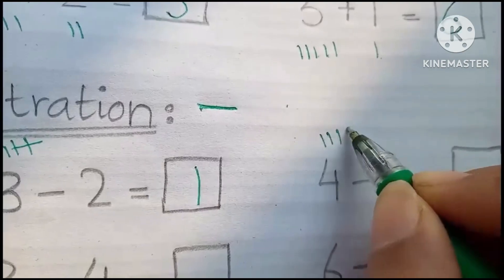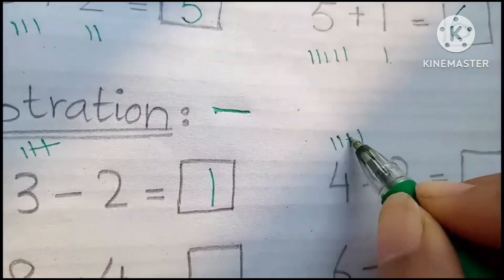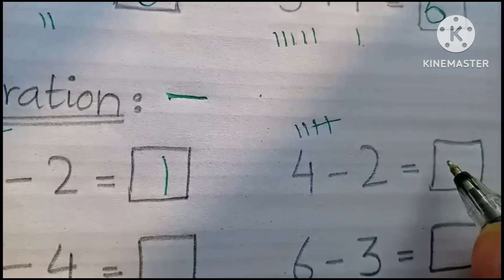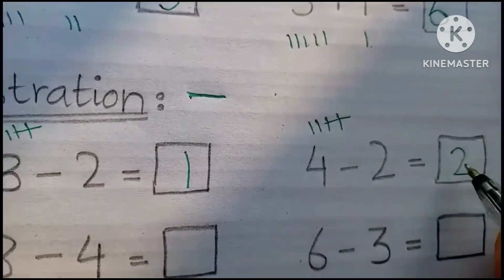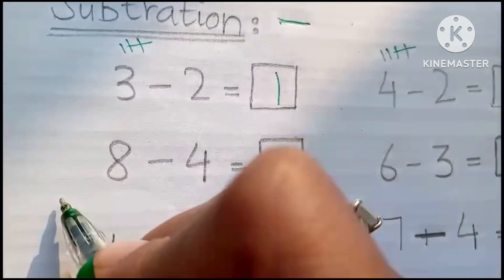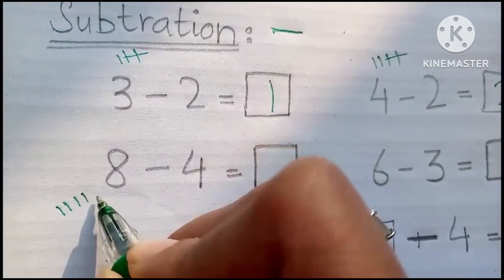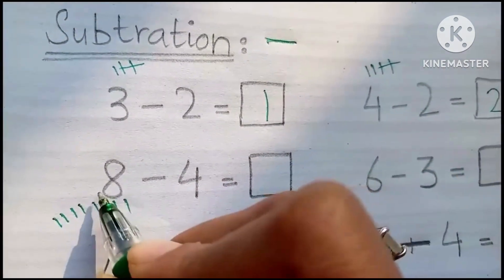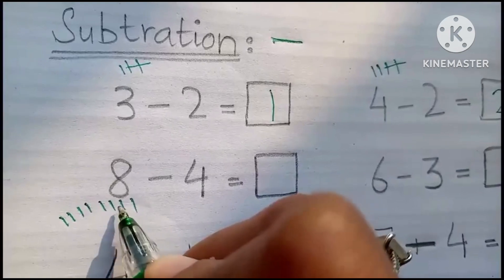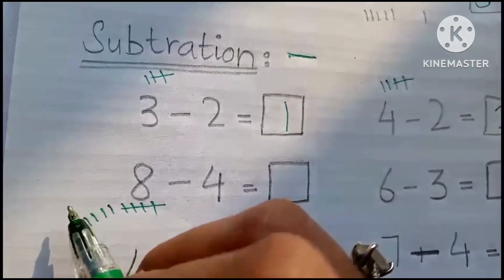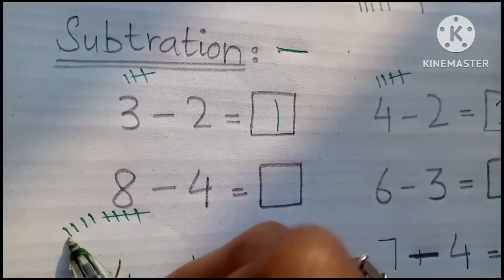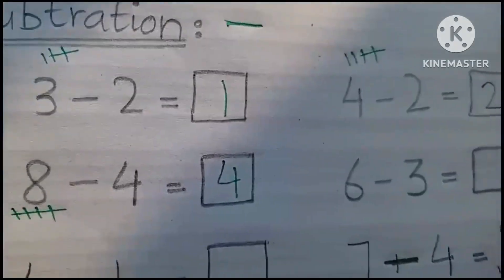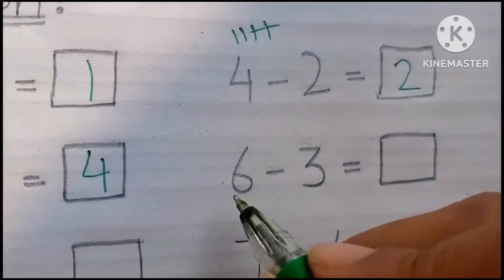4 minus 2: 1, 2, 3, 4, minus 2. 4 minus 2 is 2. Then 8 minus 4: 1, 2, 3, 4, 5, 6, 7, 8, minus 4: 1, 2, 3, 4. So how many are left? 1, 2, 3, 4. 8 minus 4 is 4.